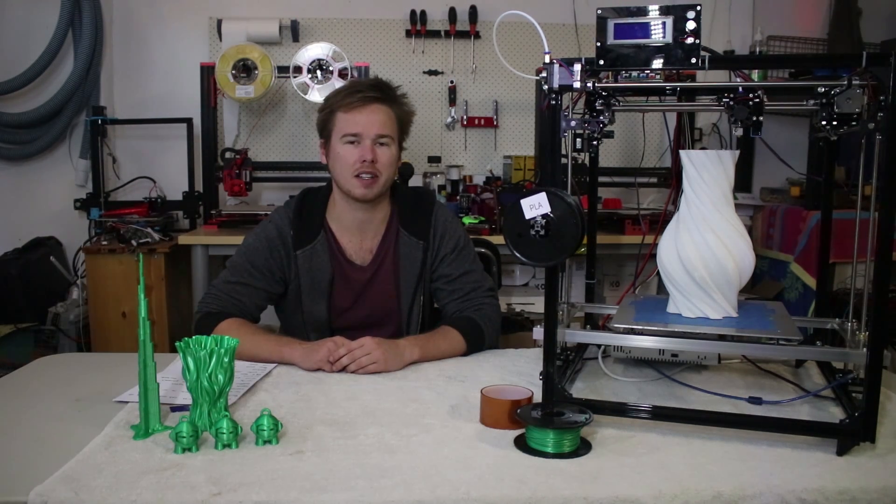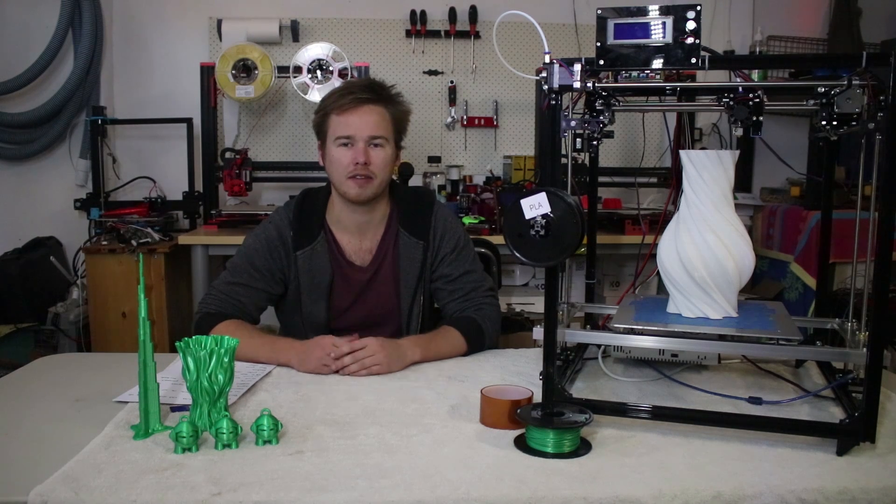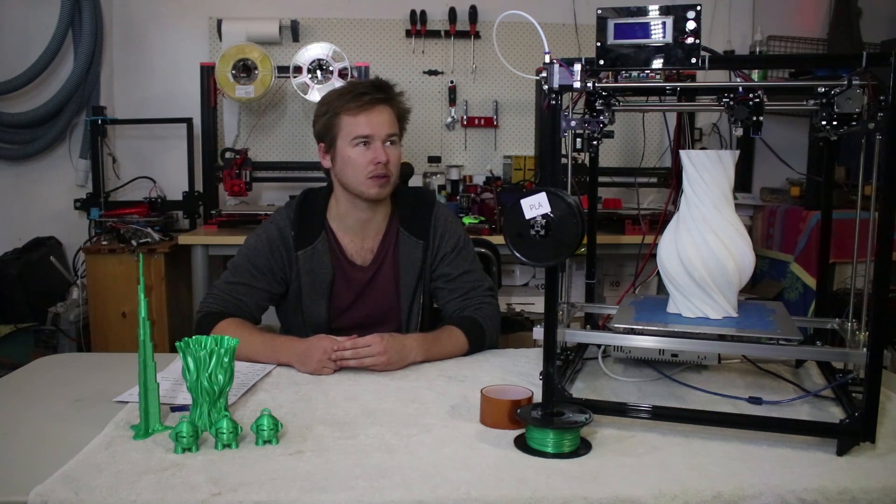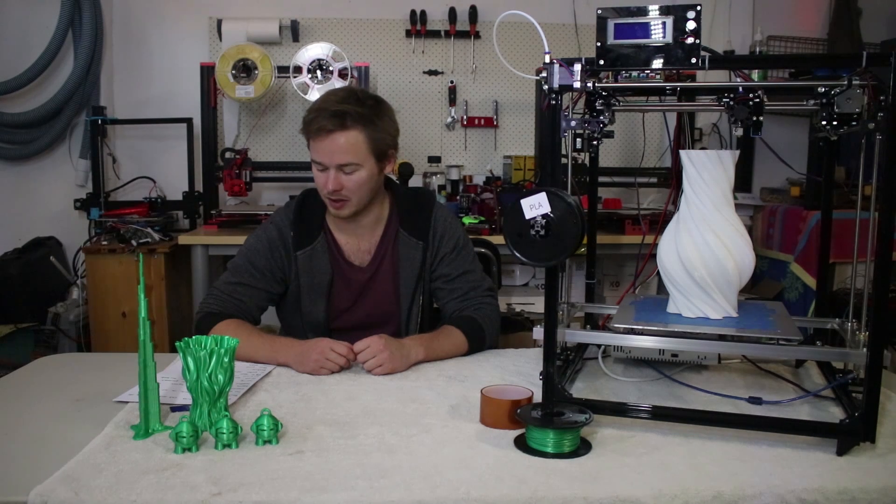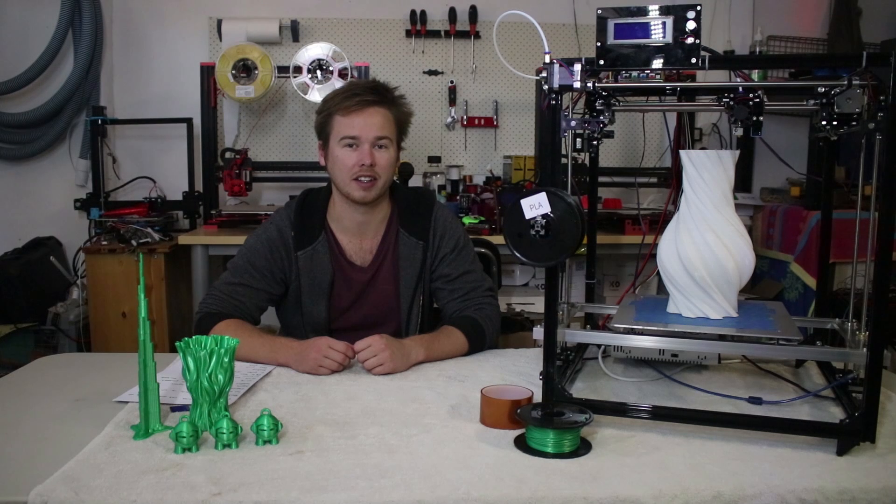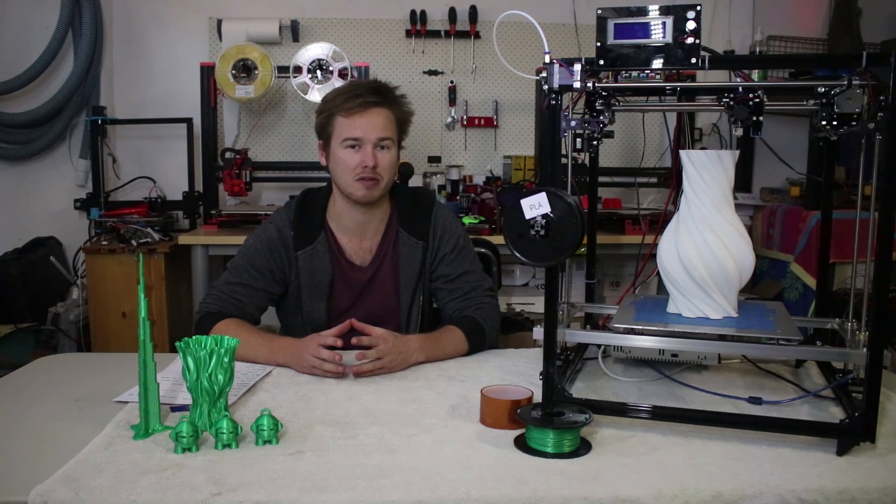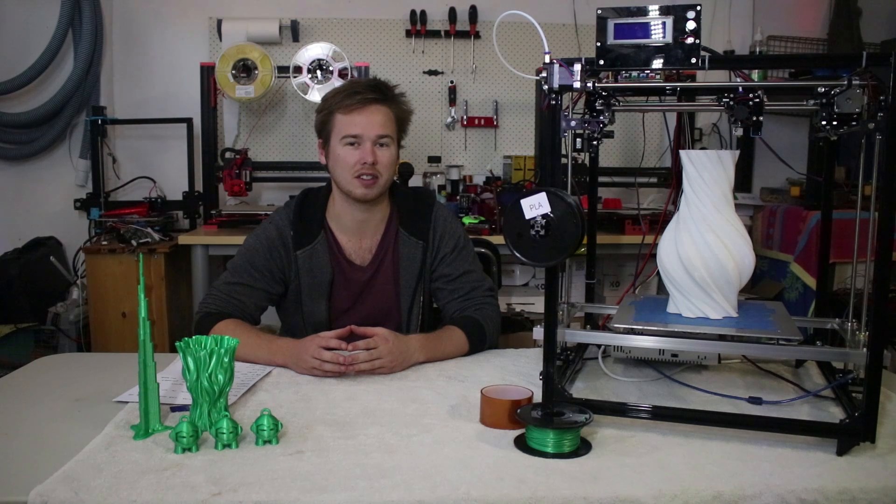So the printer comes with an SD card with all the instructions and firmware loaded onto that. There is an assembly manual in PDF format which was fairly simple to follow. There's a lot of steps. With this printer kit, I've never assembled a printer that has so many screws. Pretty much every attachment is a screw and a nut.